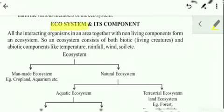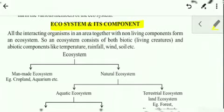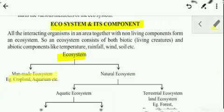Now let's begin with the next topic: ecosystem and its components. Any system in which interaction between biotic and abiotic components is taking place is called an ecosystem. This ecosystem could be man-made — that is, made by man, so they are artificial ecosystems — and it could be natural ecosystems.